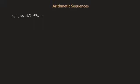In an arithmetic sequence, to get from any one term to the next, we're always adding the same amount. For instance, if you consider the sequence of numbers we have here, we quickly see that to get from any one term to the next, we're always adding 4.